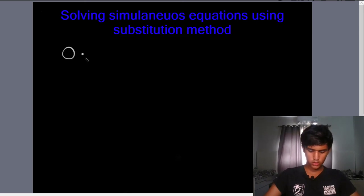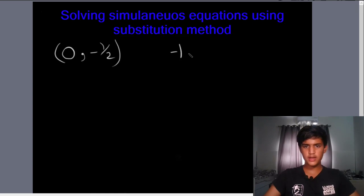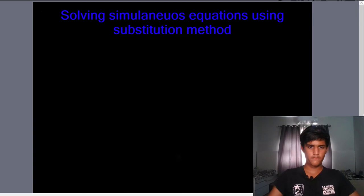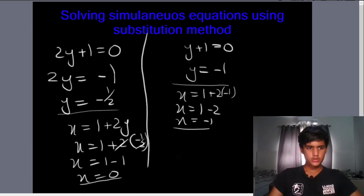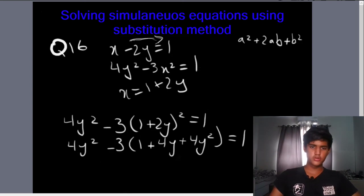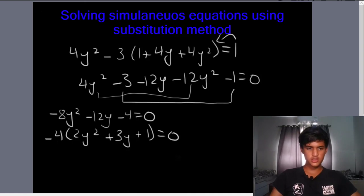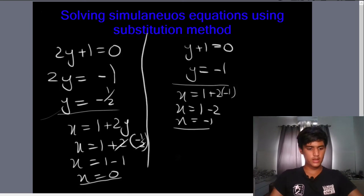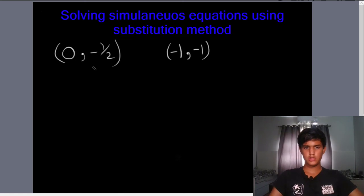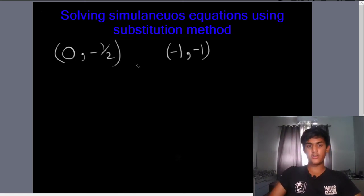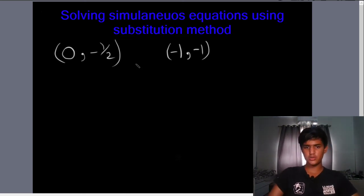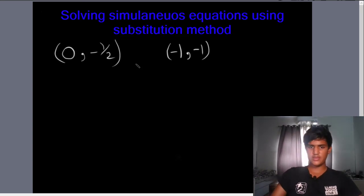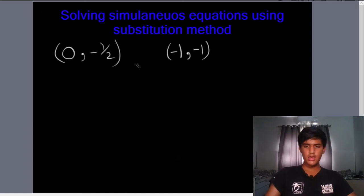The final answers are the coordinate pairs (0, minus 1/2) and (minus 1, minus 1). The steps were: expanding the bracket, simplifying into a quadratic equation, factoring to find y, then substituting back to find x. I hope you found this informative. Don't forget to like, subscribe, and share with friends who want to improve at math for their exams.